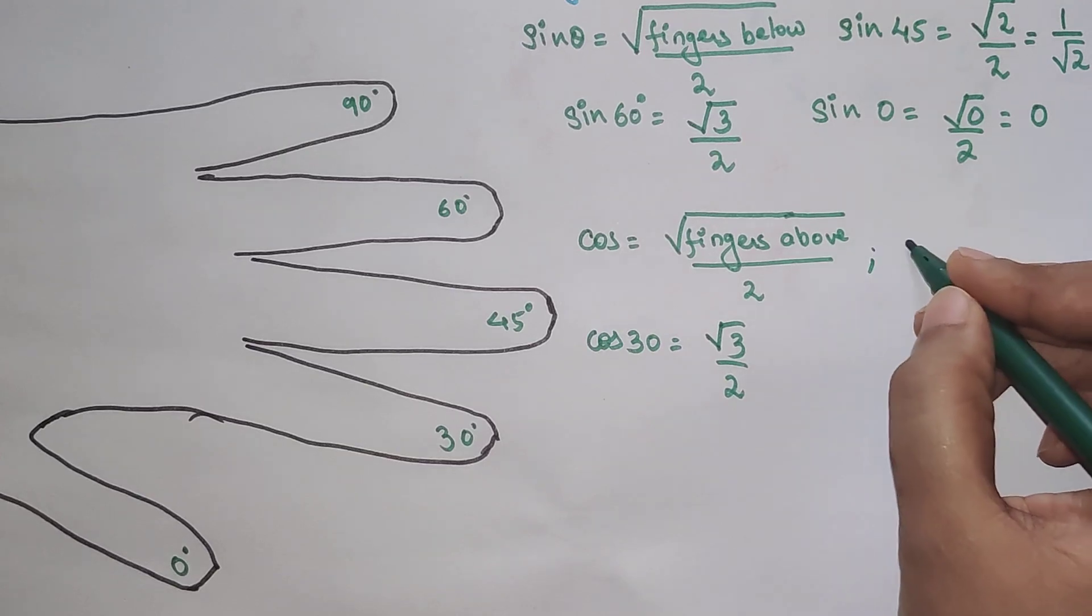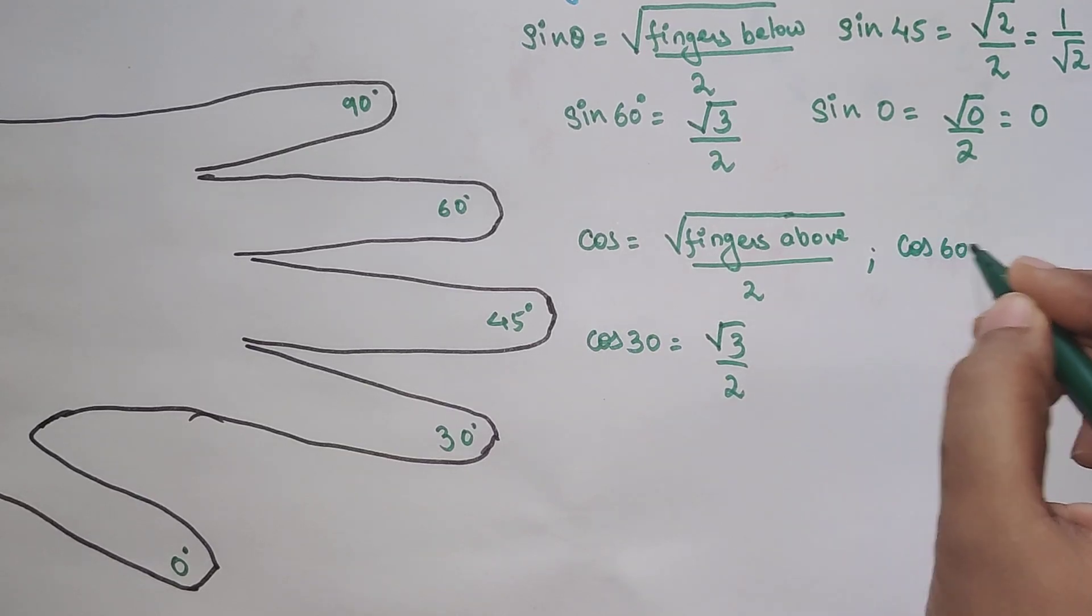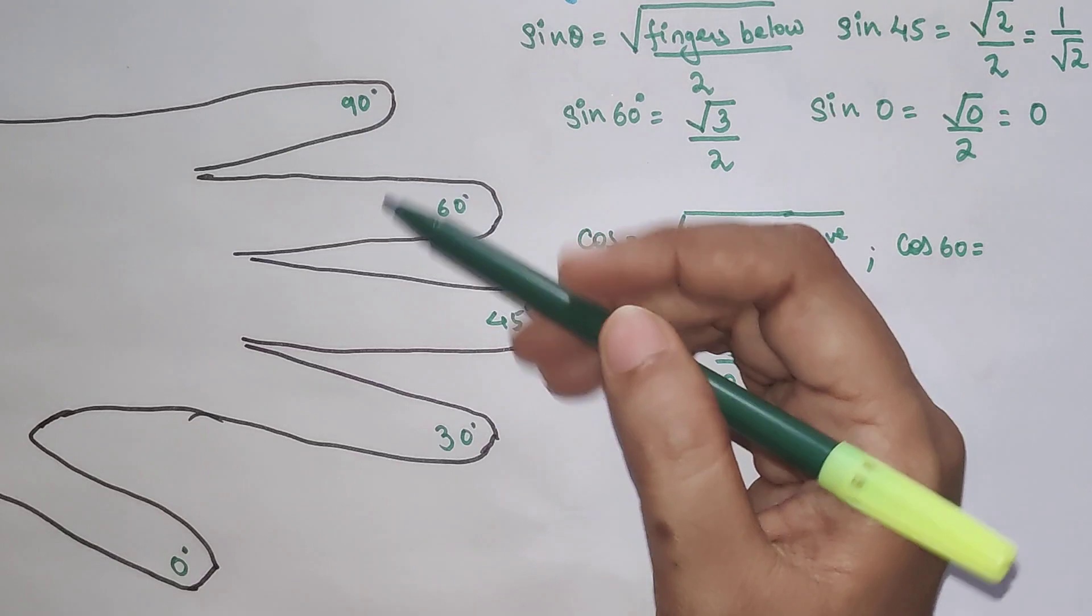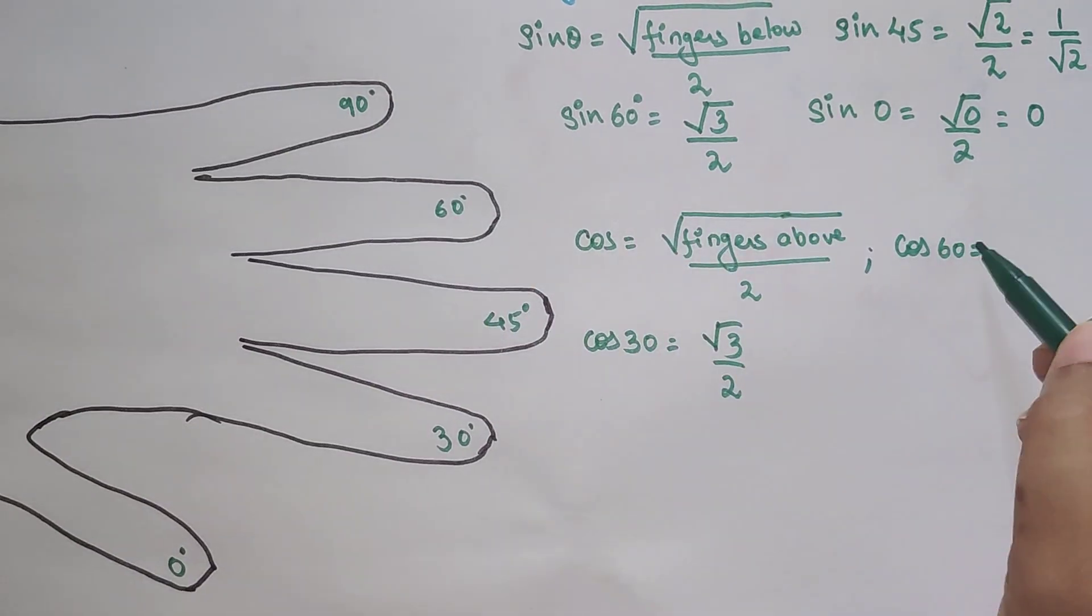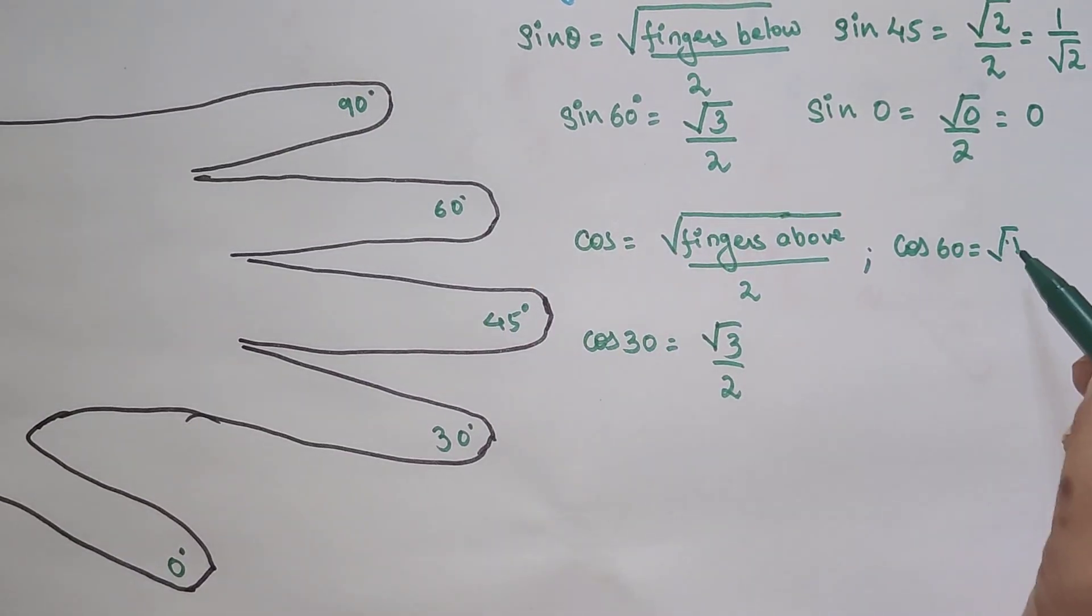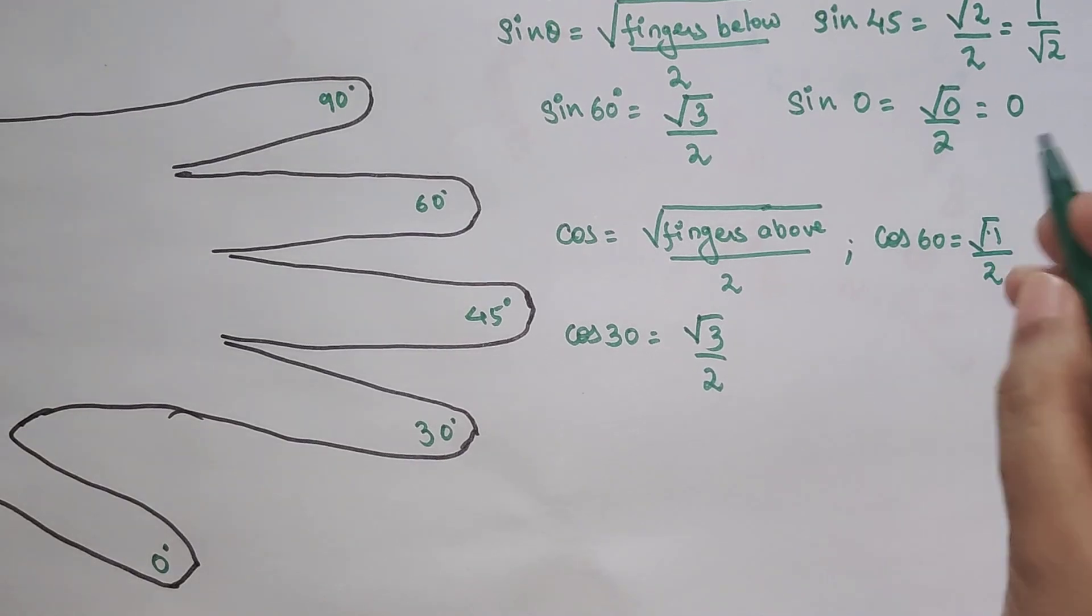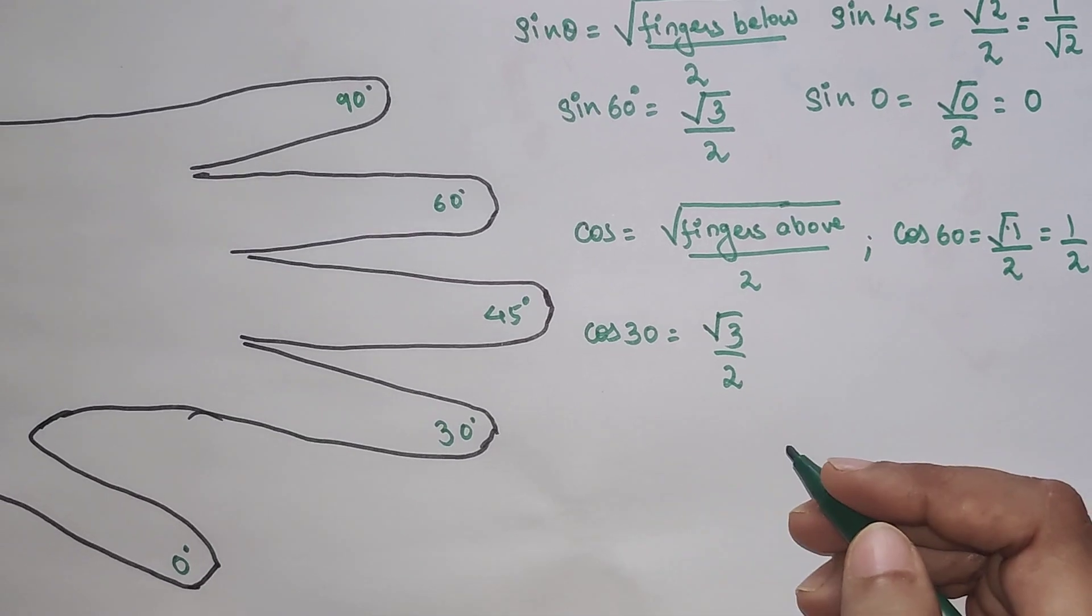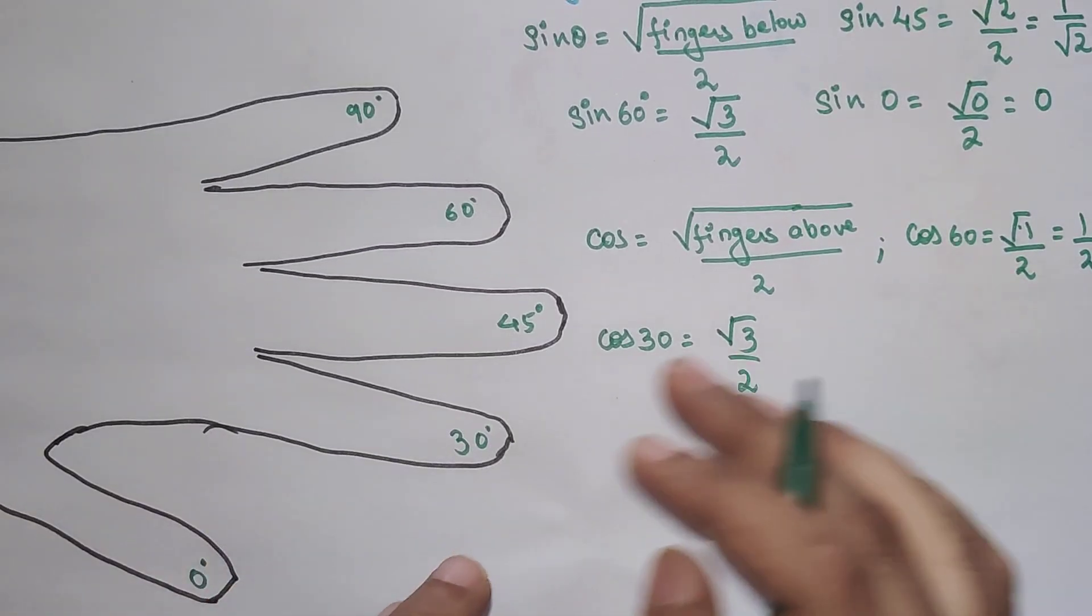Now similarly let's try for cos 60. How many fingers are above cos 60? Only 1. So root of 1 upon 2. And we know root of 1 is 1. So final answer is 1 upon 2. I hope you all are getting it. This is super simple.